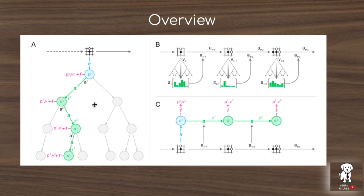MuZero uses a form of model-based reinforcement learning, which is the paradigm of learning a dynamics model that models transitions from state-action pairs to the next state — the S, A to S-prime mapping in the Markov decision process framework. The key difference between MuZero's approach and other model-based RL algorithms, like visual world models from David Ha and Schmidhuber, is that MuZero is not going to reconstruct the state space into the complete pixel space.